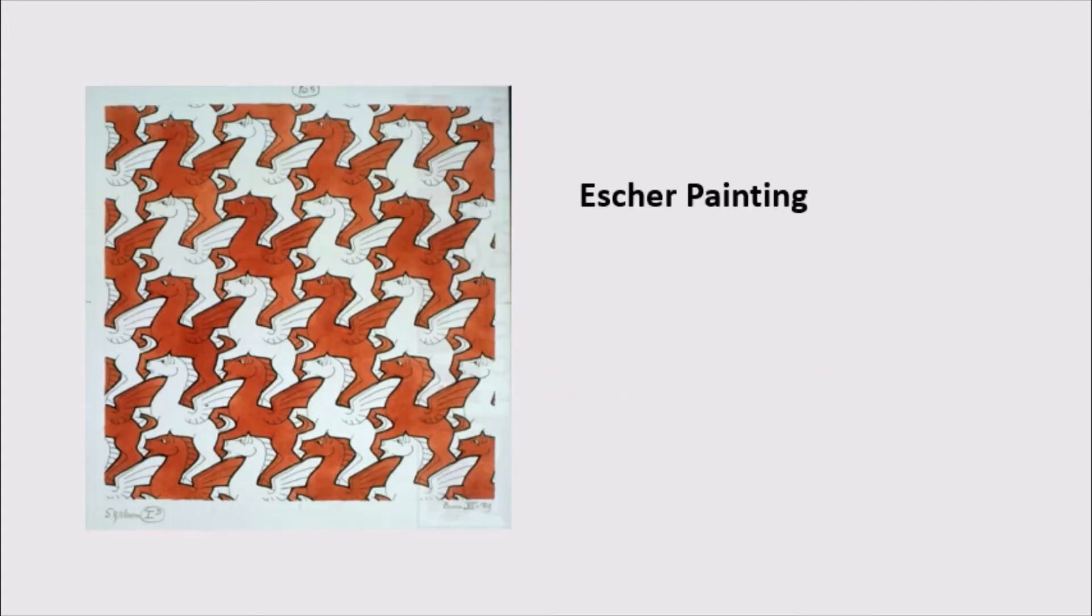Remember the Escher painting from earlier? Well, it turns out that if we look closely enough, translating the middle white horse x units to the right or y units up results in the same image. And so any combination of x and y is going to be a symmetry of this Escher painting. And just like the medieval wallpaper, these are the only symmetries of this painting, since the horses themselves are asymmetrical. So we're going to call the symmetry group with only translations p1, and it's the simplest wallpaper group.